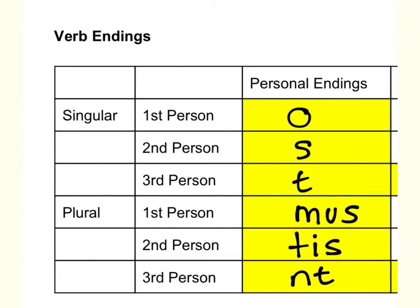Singular means the subject is only one person or thing. Verbs that end in O are first person singular, meaning the subject is understood to be I. In Latin, the word for I is ego. So verbs that end in O have an understood ego, or I, as the subject.